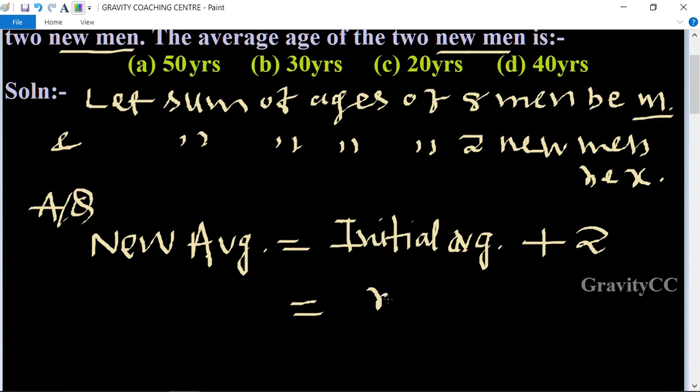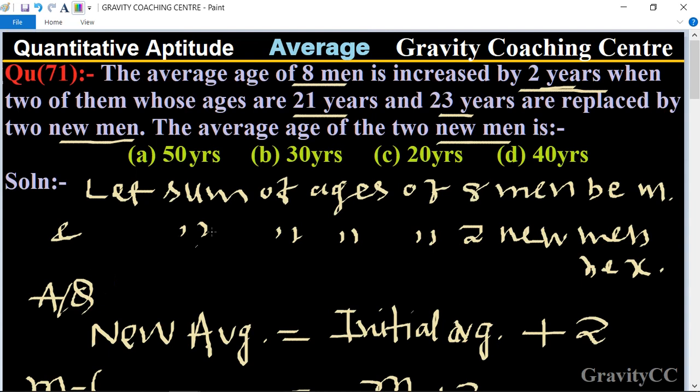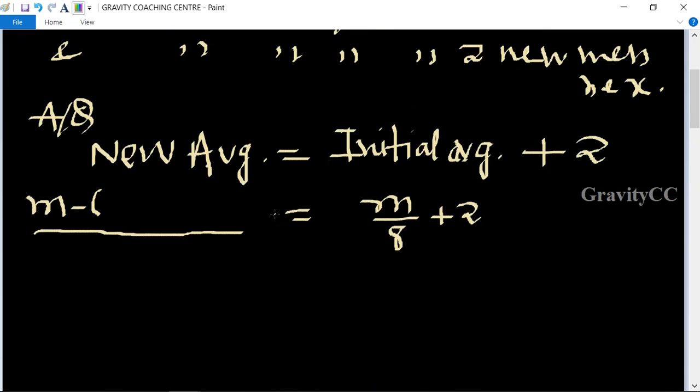So their average equal to m upon 8 plus 2. The sum of age of eight persons is m, and subtract the age of the two persons 21 and 23. 21 plus 23, and add the age of new two persons x, upon 8. This implies that m minus 44 plus x upon 8.